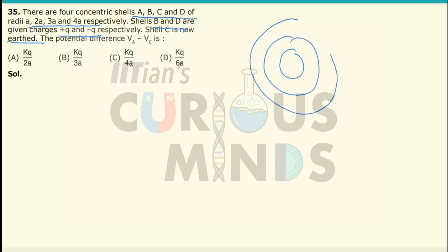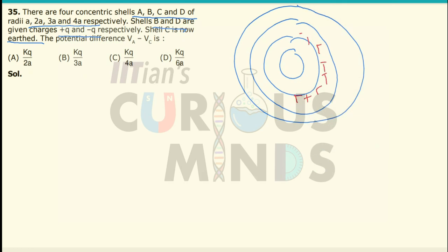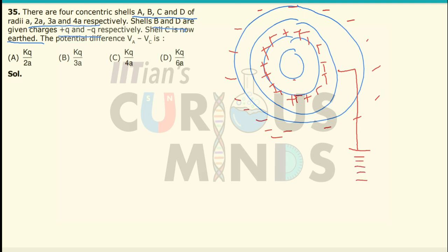Considering the 4 shells A, B, C, and D: A is at the center, B is outside it, C is the third shell, and D is the fourth and outermost shell. Shell B is given positive charge +Q, and shell D is given negative charge -Q. Shell C is connected to earth, and we have to find the potential at shell A minus the potential at shell C.